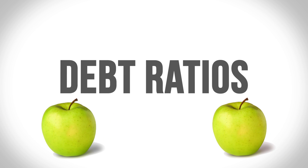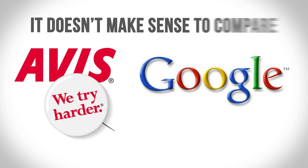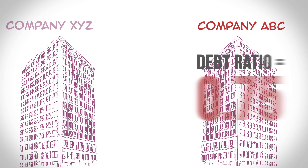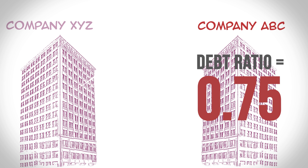The point is, when you're analyzing debt ratios, you want to compare apples to apples. It doesn't make sense to compare Avis to Google because they're two very different businesses. So if we go back to company XYZ in our example, we might compare its 0.67 debt ratio to competitor ABC's debt ratio of 0.75.